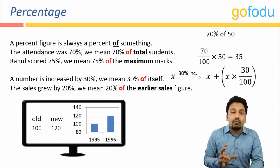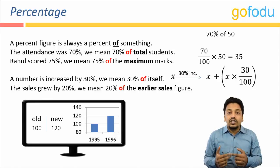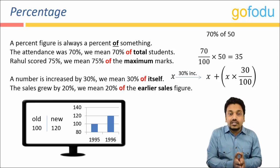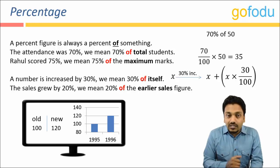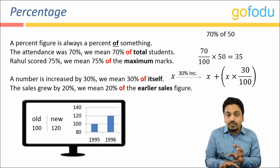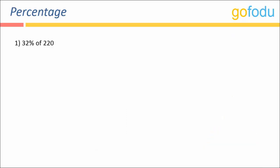The word 'of' is very important — you should always ask 'this much percent of what?' Let us solve a few questions. Thirty-two percent of two twenty: thirty-two percent means thirty-two divided by hundred, and 'of' means multiplication. So this would be thirty-two upon hundred into two twenty, which on calculating comes out to be seventy point four.